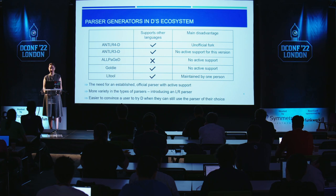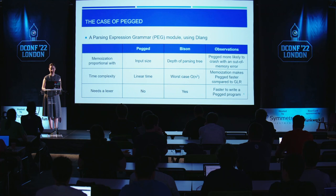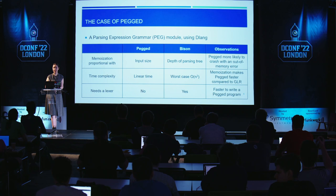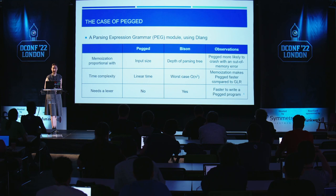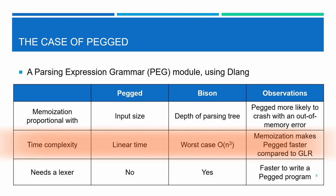You might notice I didn't mention what is probably the most popular parser generator in the D language: PEGGED, which stands for Parsing Expression Grammar. Let's compare PEGGED and Bison. Both use memoization, but in PEGGED it's proportional to the input size, while for Bison it only needs the depth of the parsing tree — so PEGGED is more likely to crash with an out-of-memory error for very large inputs. From a time-complexity point of view, PEGGED is faster with ambiguous grammars, parsing in linear time, while Bison in the worst case parses in O(n³). PEGGED also doesn't need a separate lexer, whereas Bison requires you to provide one, so from a development standpoint PEGGED might be faster to get started.